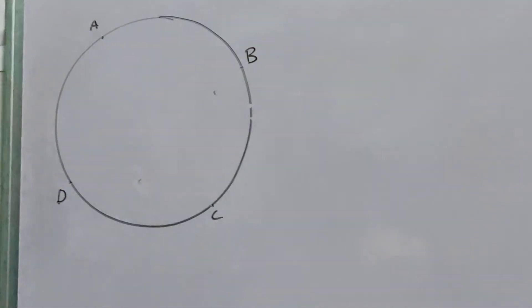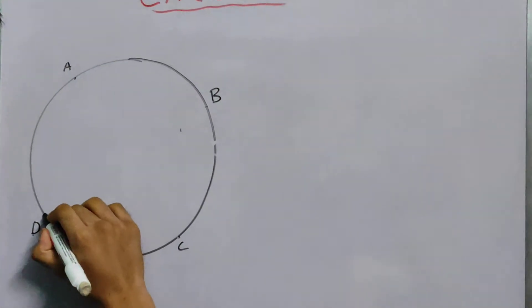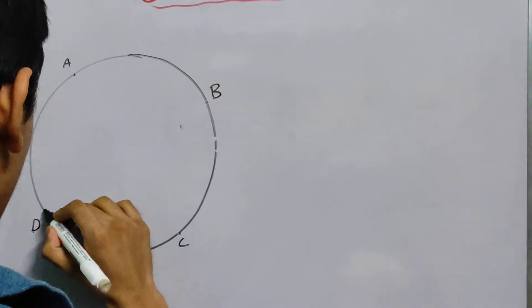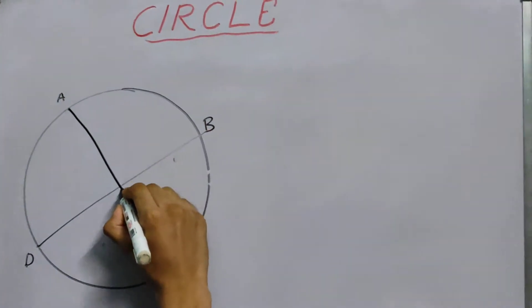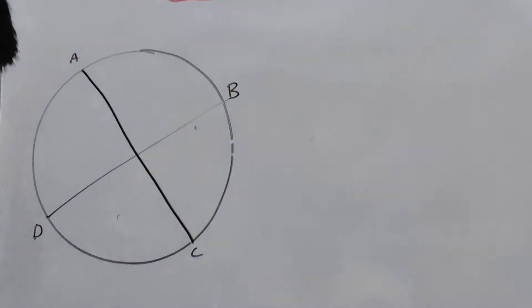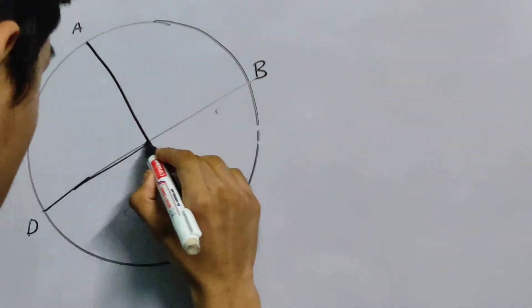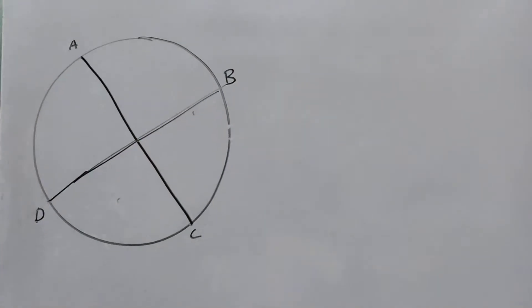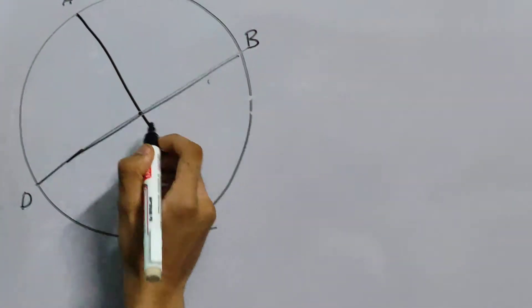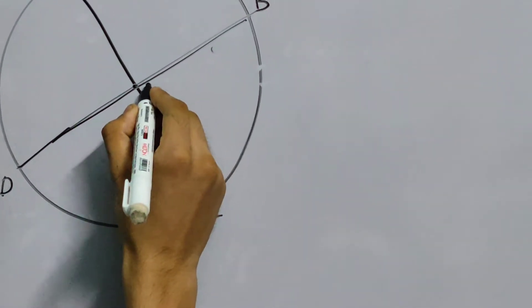Now what I do is I draw these diagonals if you want to call them, connect these two points, and let us suppose they meet at this point, this point I will call O.